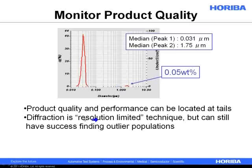Diffraction is resolution limited. If the first peak is at a median of 31 nanometers and you mixed in another material at a median of 40 nanometers, diffraction wouldn't be able to give you baseline resolution between them — it would most likely give you one peak that's a mix of the 30 and 40 nanometer material. It's not measuring every single particle; because it measures an ensemble of particles, you have limited resolution.